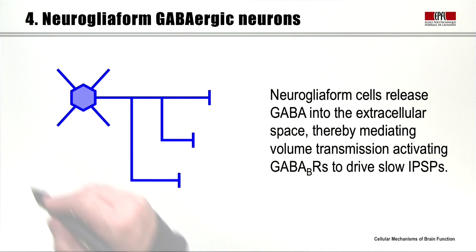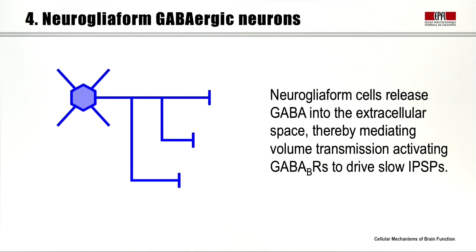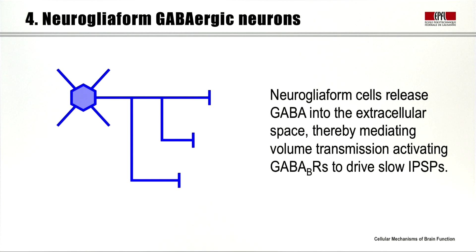The last type of neocortical GABAergic neuron to consider is the so-called neurogliaform cell. These are small, compact cells with an extremely dense axonal arborization close to their soma. What's specifically interesting is that along their axons they form boutons and release GABA, but they don't have an obvious postsynaptic partner. These cells seem to release GABA into the extracellular space, regulating extracellular GABA concentrations and signaling via GABA-B receptors, causing slow inhibitory postsynaptic potentials.